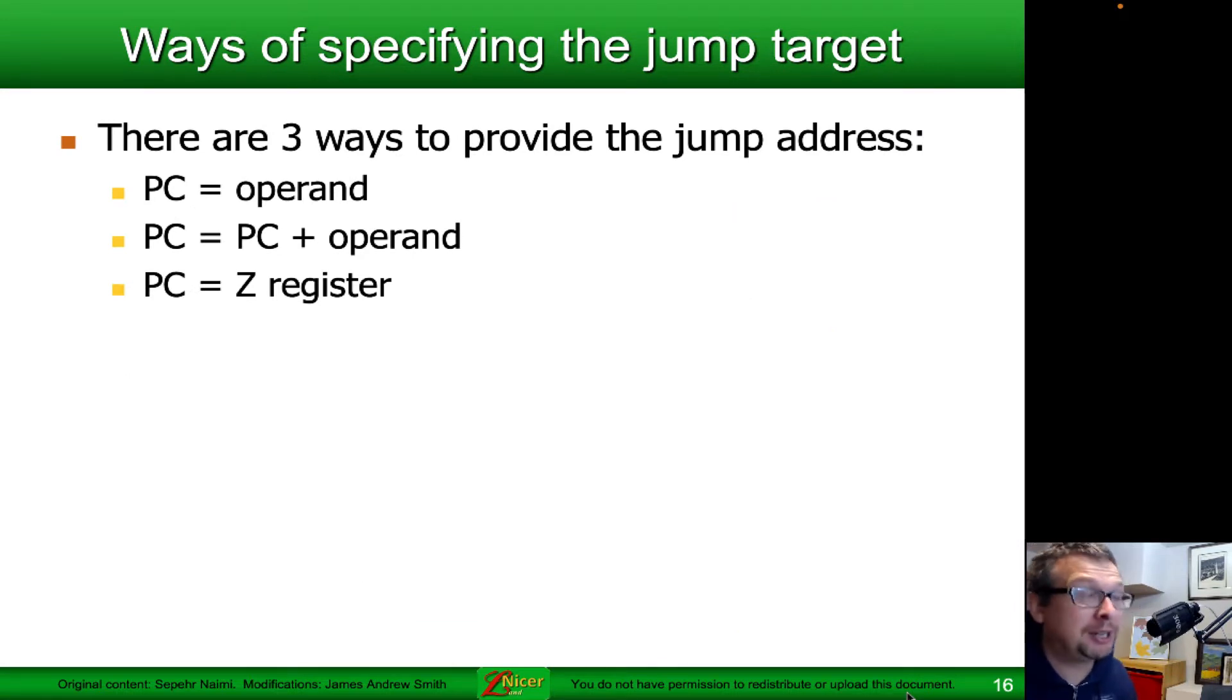All right, there are three ways to provide the jump address. We either tell the program counter what the address is through the exact value of the operand, so it's a number. Or else we say to the program counter, take your value as it is right now and add a value to it—that's the relative jump. And then the other one, the indirect jump, is where we say take whatever value is in the Z register—not to be confused with the Z bit of the status register—the Z register, and go to that location.